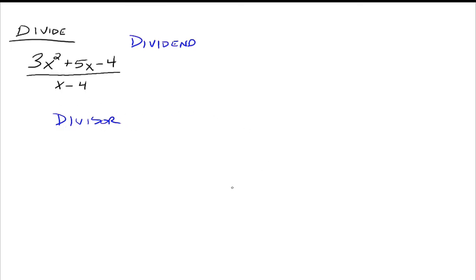We're going to do this division, and that's going to give us a quotient, and possibly a remainder. So those are the four words: divisor, dividend, quotient, and remainder. Let's go ahead and start working this.